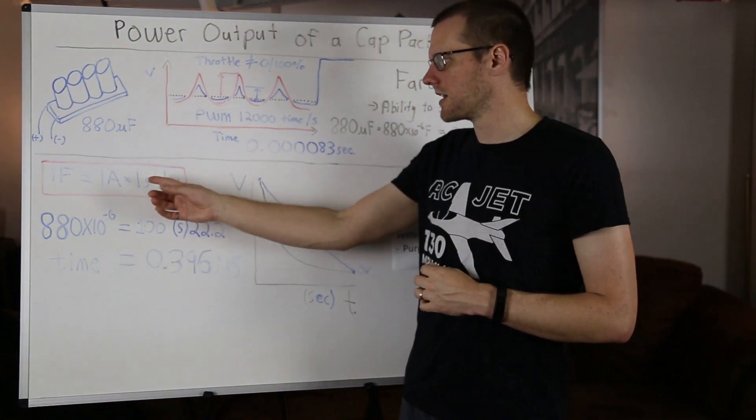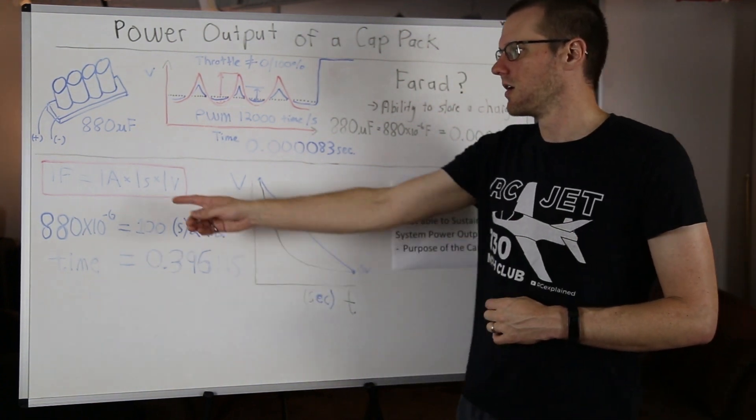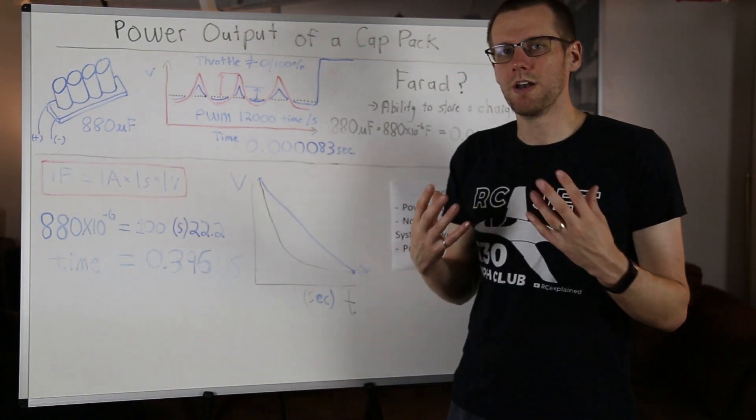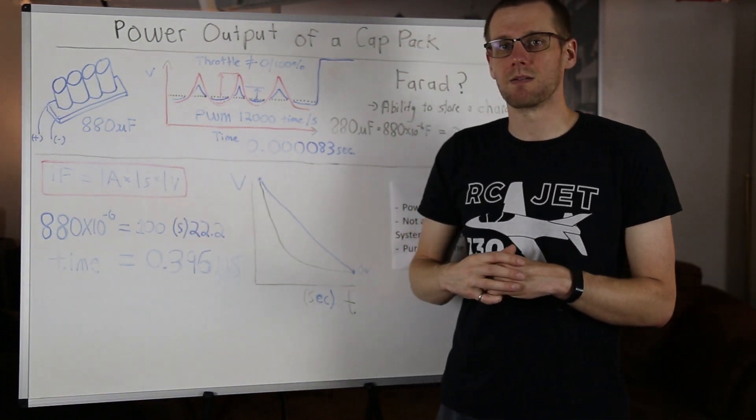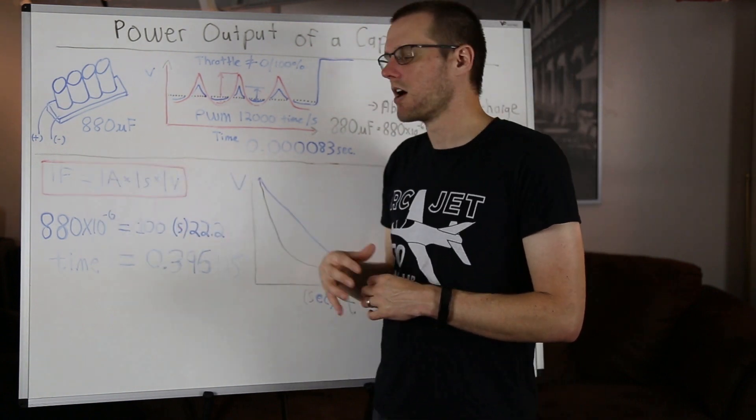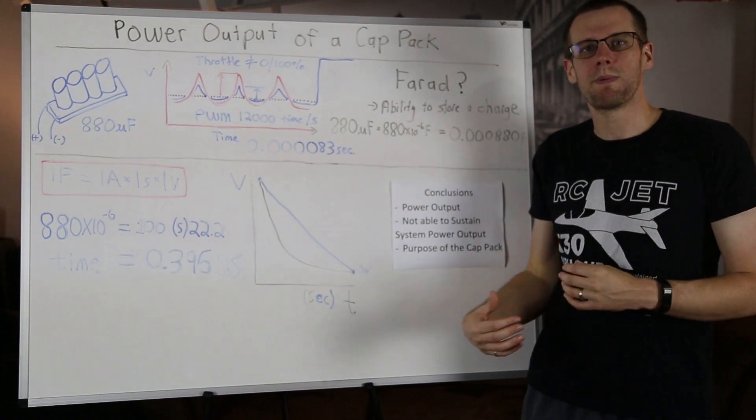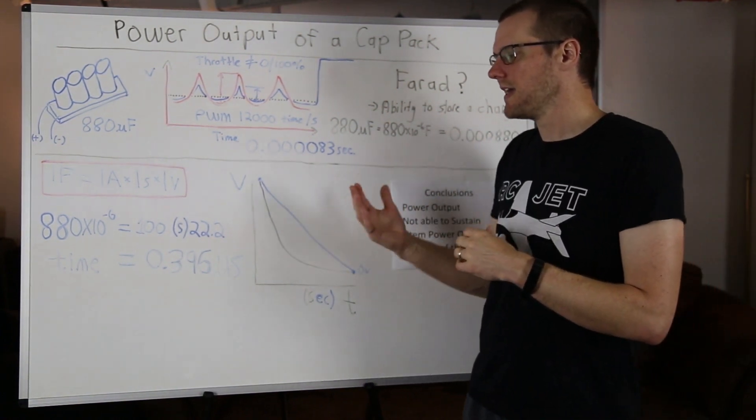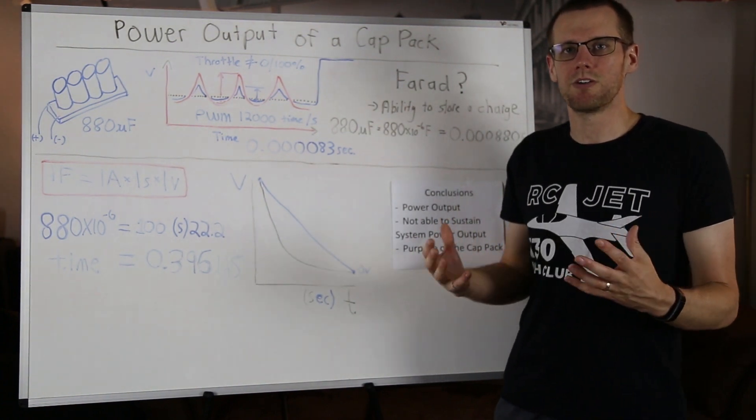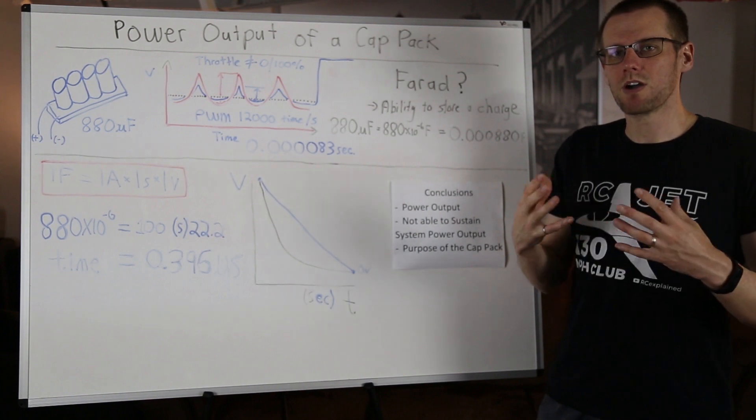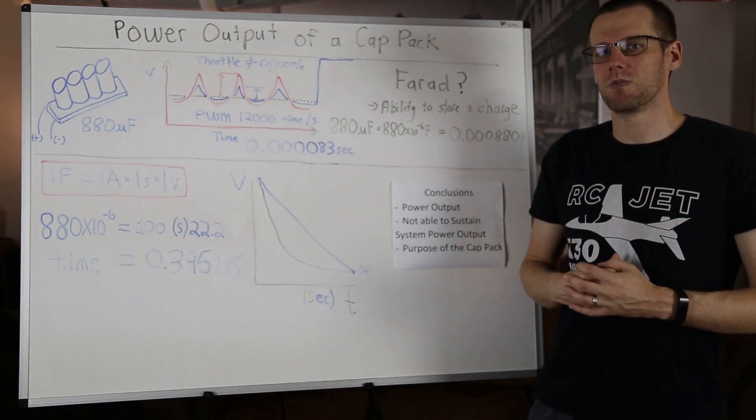Here is the formula in order to understand how we can translate this into something that we better know. 1 farad is equal to 1 amp being dumped at 1 volt for 1 second. And that's what's represented here in our formula. All we need to do now is come up with a scenario and then substitute our value of capacitance into that formula. In that case, we're going to assume that we're running a vehicle that has a 6-cell lithium polymer battery, and we're going to pull 100 amps from that. What kind of power are we going to be able to pull from our capacitor, and for how long can we do that?